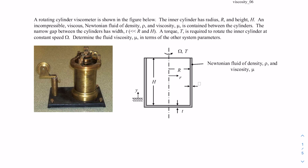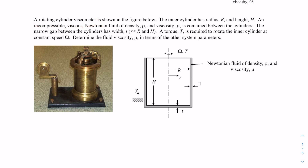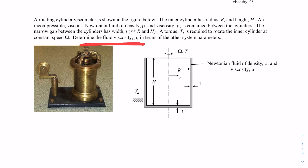In this example we will be analyzing a rotating cylinder viscometer. Viscometers are used to measure fluid viscosity, and because there are no direct methods to measure fluid viscosity — unlike mass, which we can measure by directly weighing — we need to employ indirect methods.